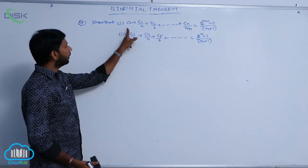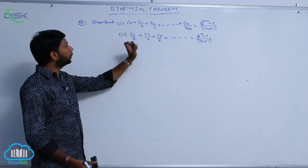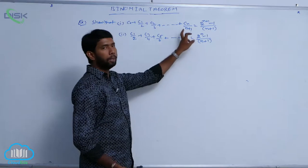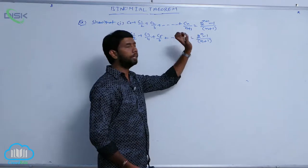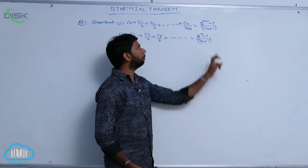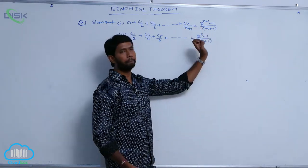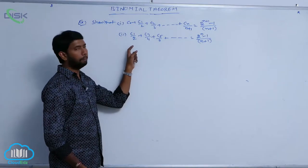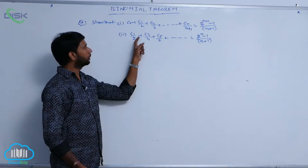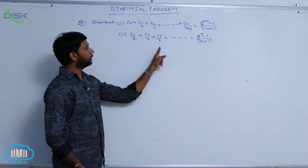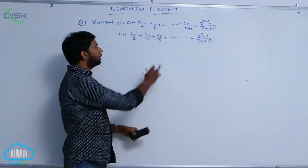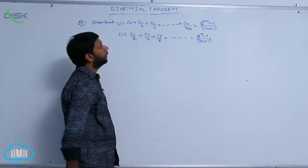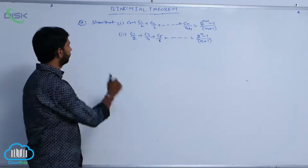Show that the first identity: C₀ + C₁/2 + C₂/3 + ... + Cₙ/(n+1) is equal to (2^(n+1) - 1)/(n+1). And the second identity: C₁/2 + C₃/4 + C₅/6 + ... is equal to (2ⁿ - 1)/(n+1).